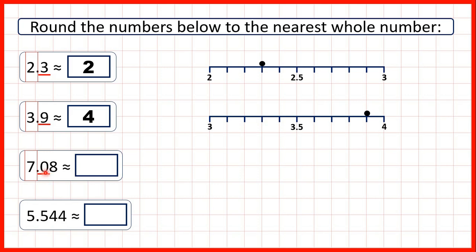Now we have a 0, which means we're rounding down, so the 7 stays the same, so 7.08 to the nearest whole number is 7.